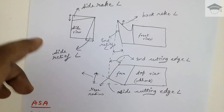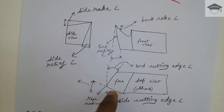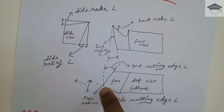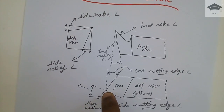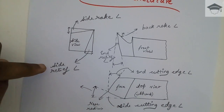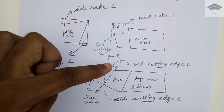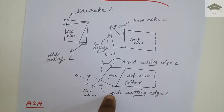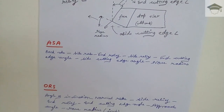There are mainly six angles, and one is the nose radius — that is the radius provided at the nose of the tool. The six angles are: side rake, side relief, back rake, end relief, end cutting edge angle, and side cutting edge angle. This is the basic overview of single point cutting tool geometry.